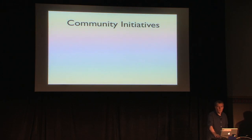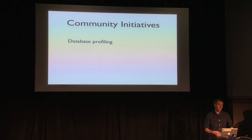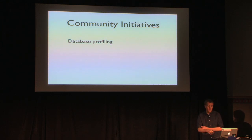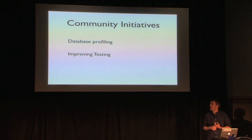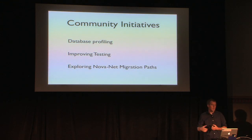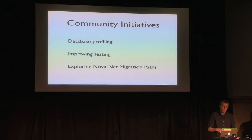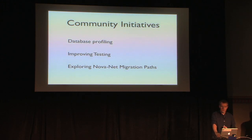A couple of community initiatives we're working on include database profiling at scale — different deployments have different scale characteristics, and folks within the community are making sure that the database queries are as efficient and run as fast as possible. Also improving testing, which results in a better release and makes our product better. And exploring Nova Network migration paths — right now there's not a story if you deploy Nova Network and want to upgrade to Quantum, so the community is looking into what those paths look like and how we can facilitate that. The Nova teams and Quantum teams are also working together to improve the integration experience between the two.